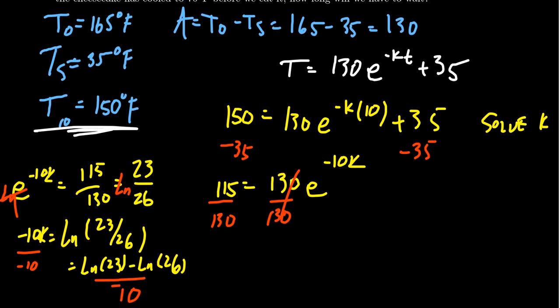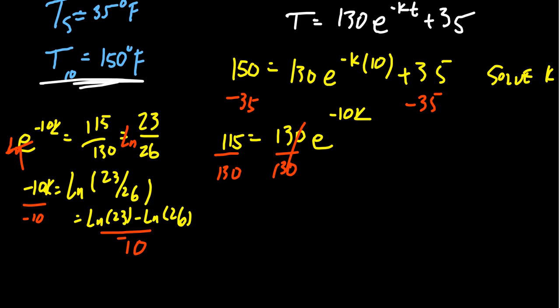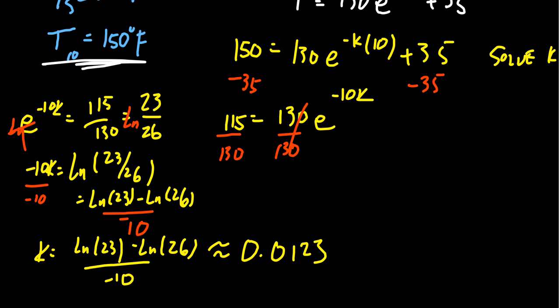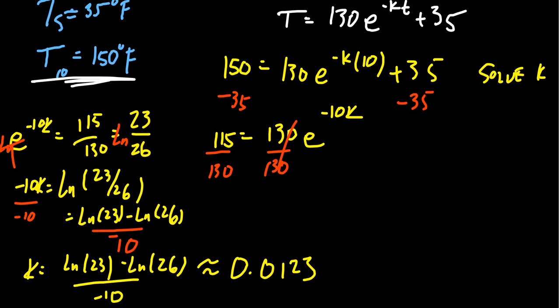You could expand that if you wanted to, to be the natural log of 23 minus the natural log of 26, but you can keep it as fraction as well. It doesn't make much of a difference. Now to continue, divide both sides by negative 10. And so we end up with our K value. K is equal to the natural log of 23 minus the natural log of 26 over negative 10, for which we're going to try to estimate this thing. We do want to have a lot of decimals so that we get accuracy here. We get the decimal 0.0123. We'll just round to four decimal places. So our K value is 0.0123.